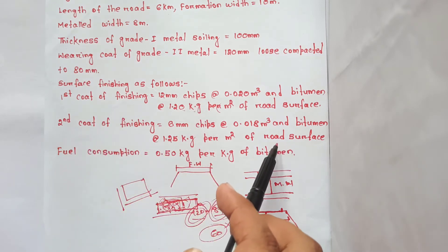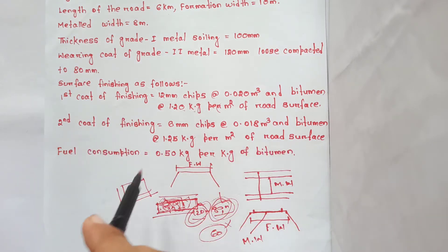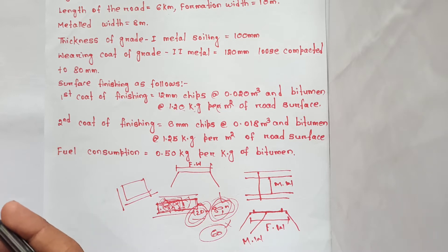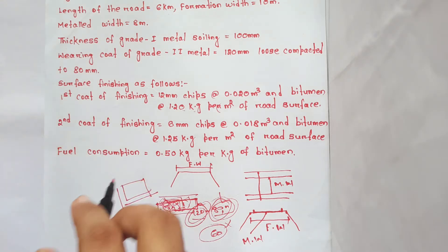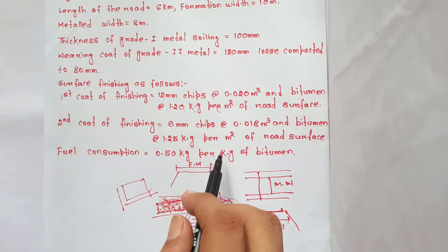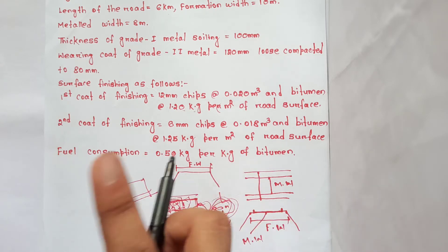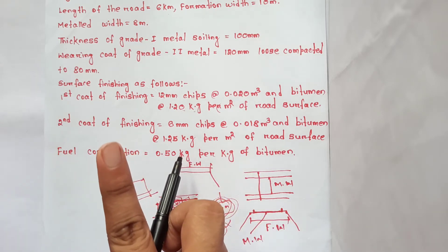For the second coat, bitumen is used. The bitumen consumption is 0.50 kg per m² for the road surface finishing.